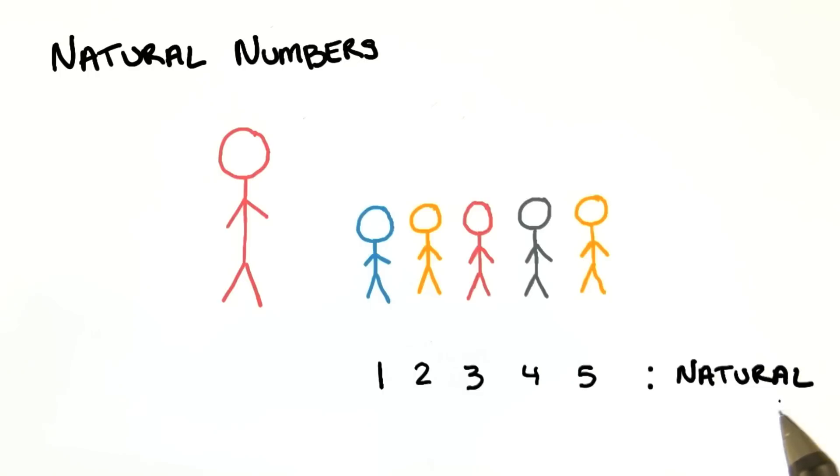You can think of the natural numbers as counting numbers. And when we count, we usually begin with the number one, not zero.